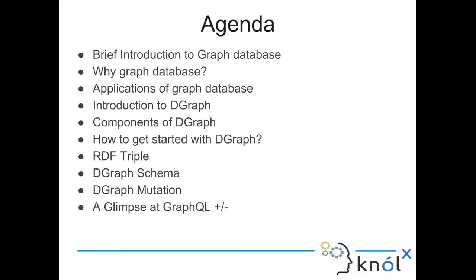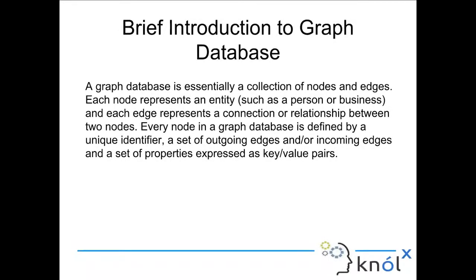A brief introduction to graph database. Basically, what is a graph? A graph is a collection of nodes and edges. When we store our data in the form of nodes and edges, it becomes a graph database. From a business perspective, nodes are basically entities or objects. For example, in a friends graph, a node would represent a person, and the edge is basically a connection or relationship between two nodes. So two people connected with an edge called 'friend' would signify that those two people are friends.